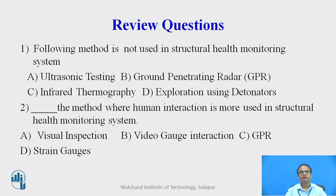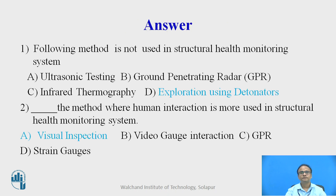Review questions. First question: which of the following methods is not used in structural health monitoring system? Options: ultrasonic testing, ground penetrating radar (GPR), infrared thermography, or exploration using detonators. Second question: which method has the most human interaction in structural health monitoring system? Options: visual inspection, video gauge interaction, GPR, or strain gauges. Answer to the first question: exploration using detonators — it is not used in SHM. Answer to the second question: visual inspection, as there is more human interaction possible — option A is the correct answer.